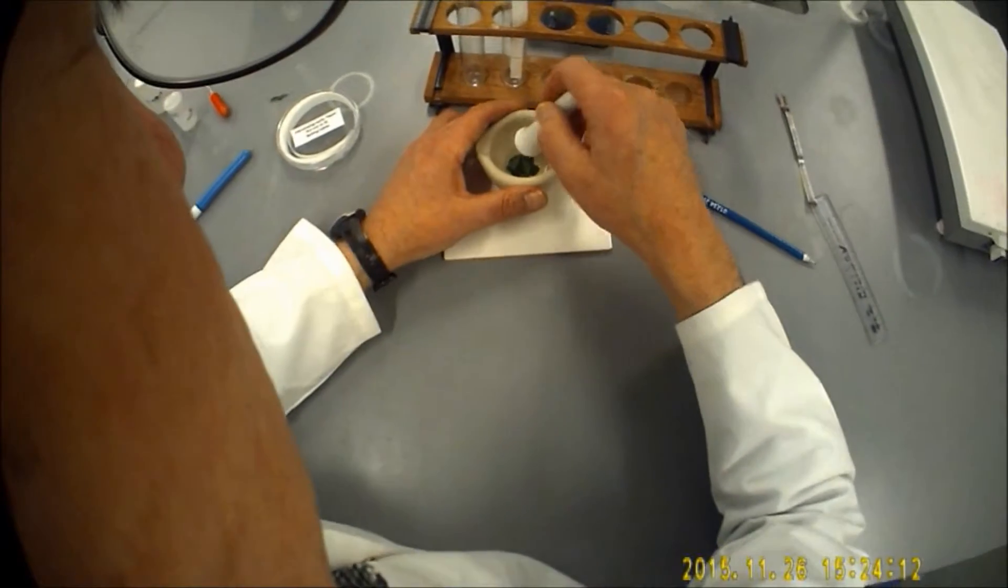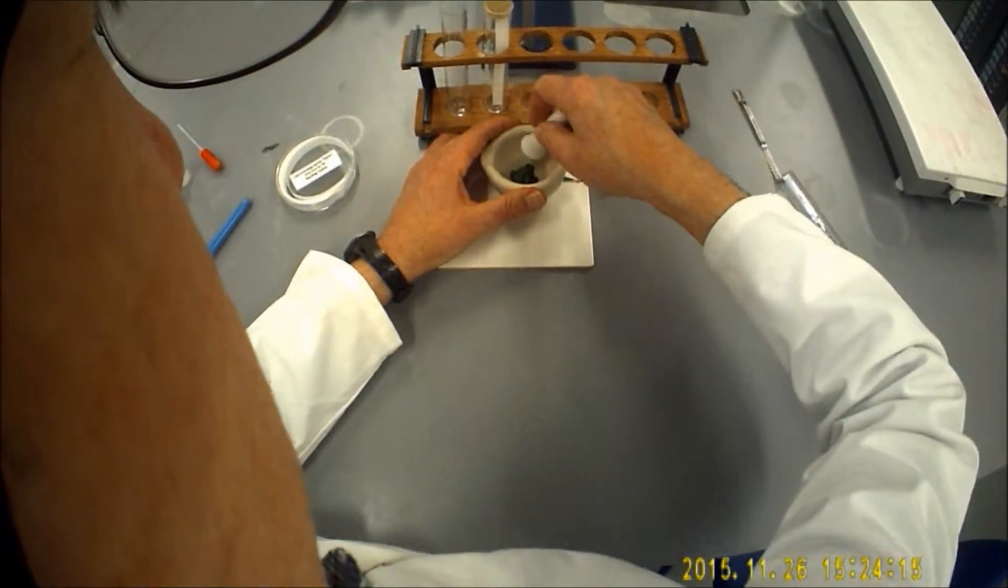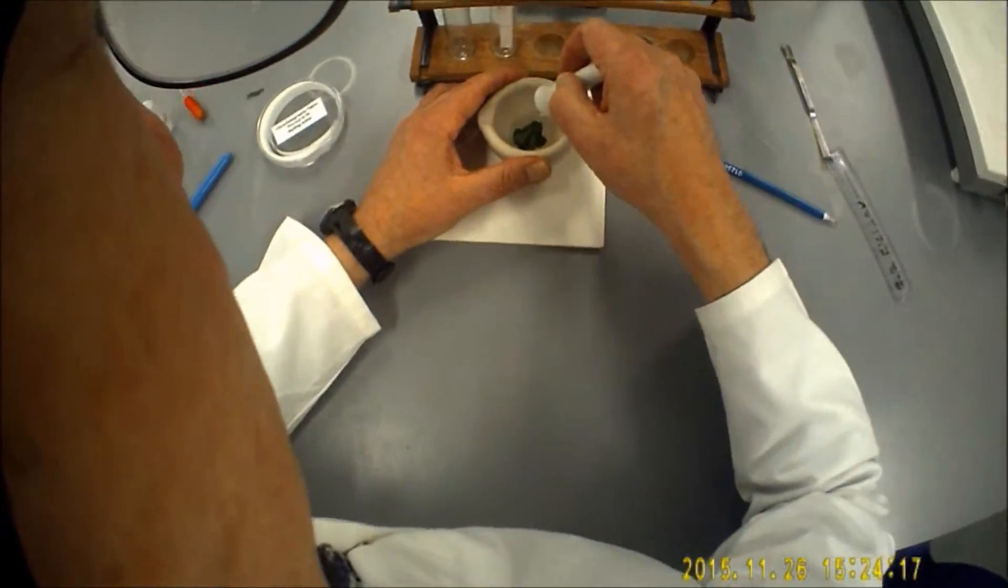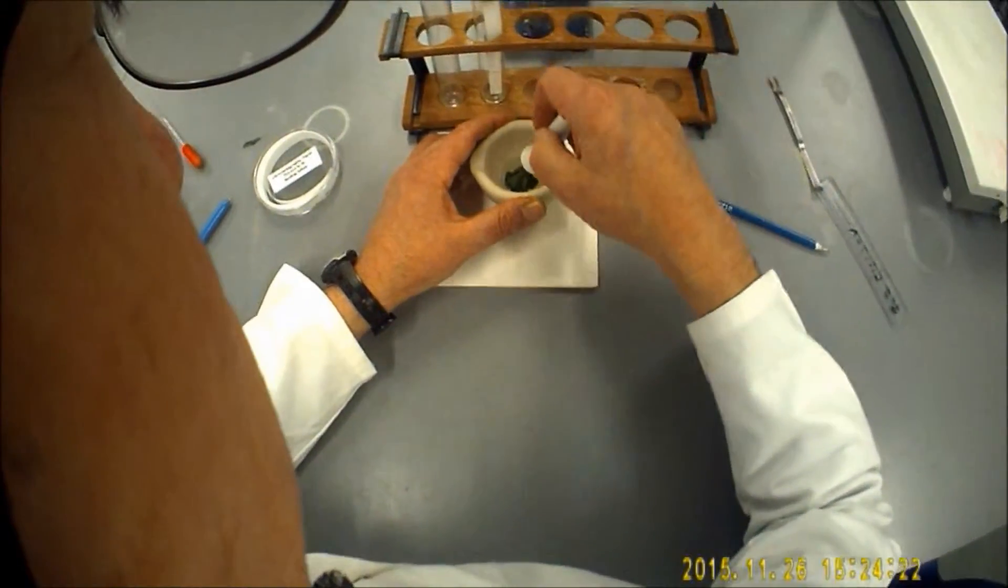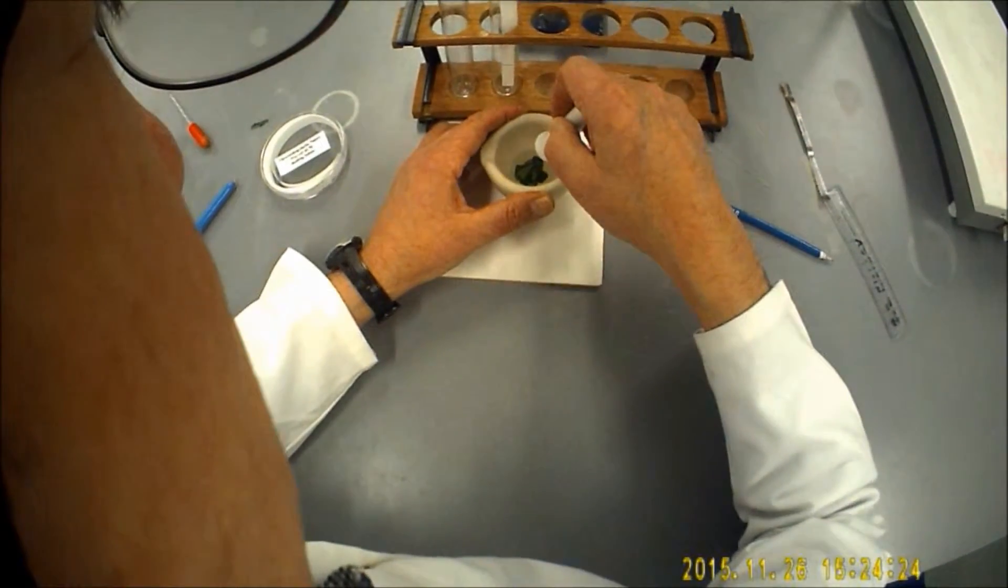What I'm going to do now is grind the leaf, just to liberate those pigments from the leaf. So the chlorophylls. And of course there are lots of different pigments in the chlorophyll itself.